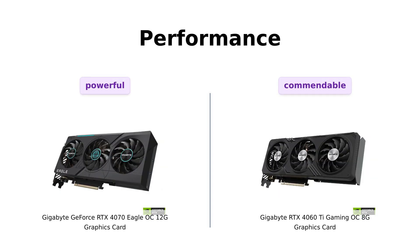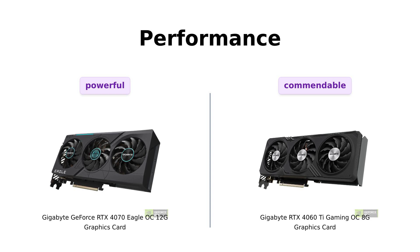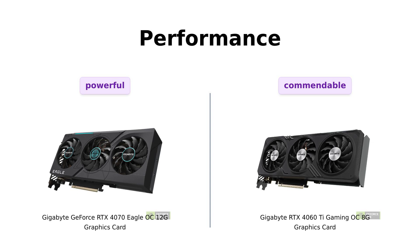Now let's talk about performance. Both graphics cards are powered by NVIDIA DLSS 3 and offer ultra-efficient Ada Lovelace architecture with full ray tracing capabilities. However, the Gigabyte GeForce RTX 4070 Eagle OC 12G takes the lead with its fourth-generation Tensor Cores, providing up to four times the performance with DLSS 3. It also features third-generation RT cores, offering up to two times the ray tracing performance.